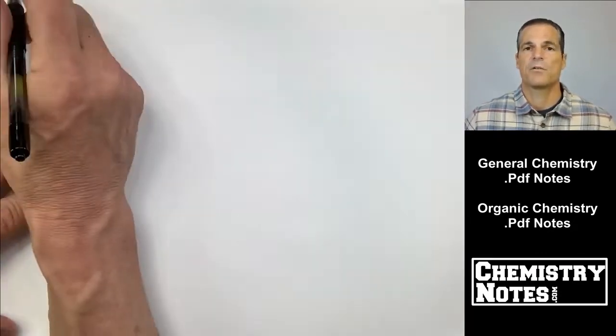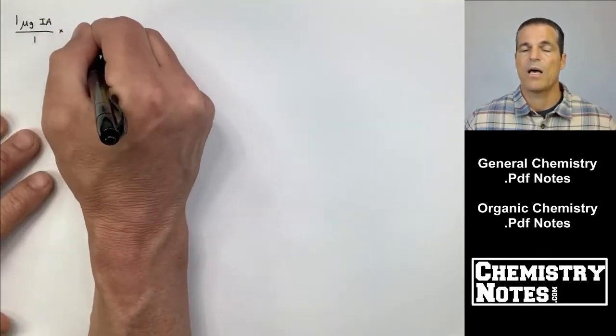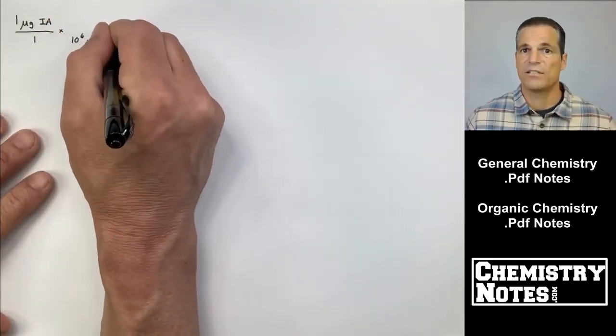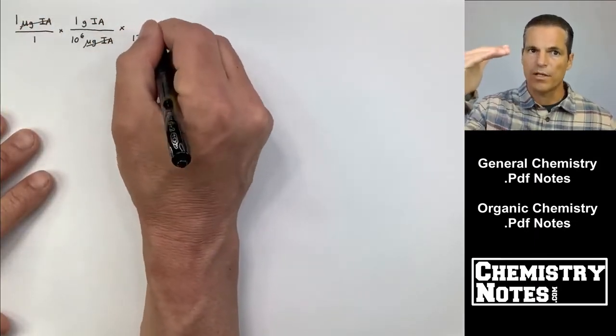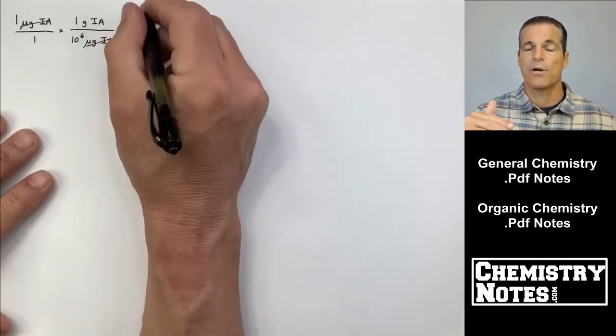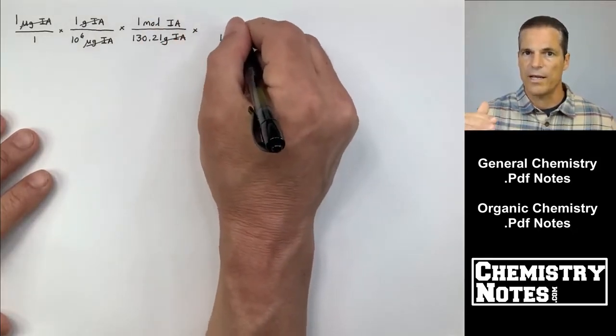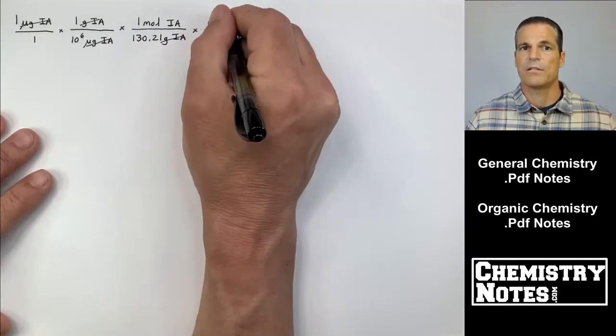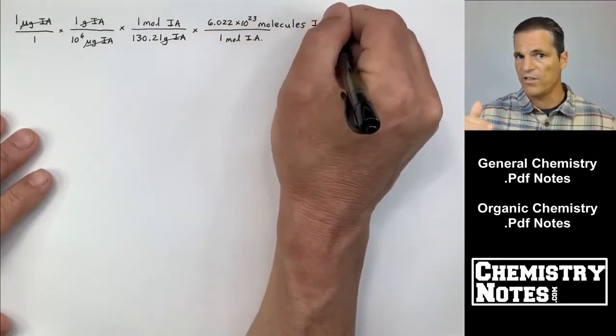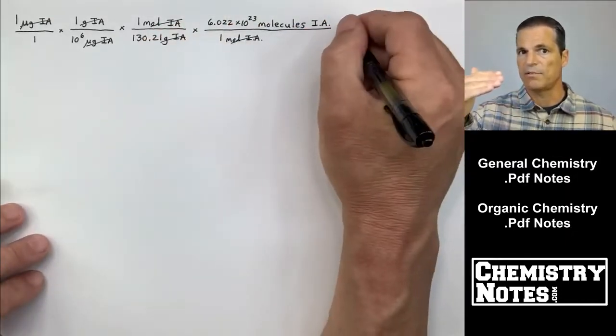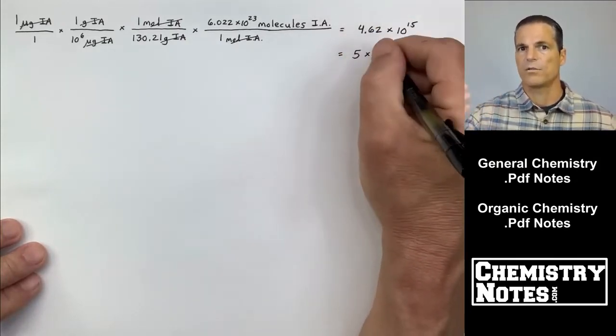Now we can start with what we're given and put it over one. We're not given much, we're given one microgram. I'm not just going to write one microgram, I'm going to write one microgram of IA, isopentyl acetate. If you want to write C7H14O2, you can do that too. 10 to the 6 micrograms is one gram, that gets me out of that yucky micrograms into grams. Divide by the molar mass, so I got 130.21 grams on the bottom for every one mole of isopentyl acetate. They don't want moles, they want molecules. Well, one mole of anything contains 6.022 times 10 to the 23rd items of that anything. We're talking about a molecule, so it's molecules IA.